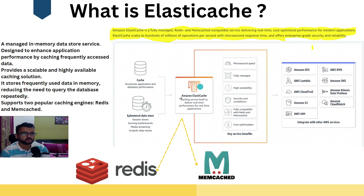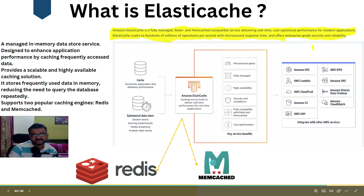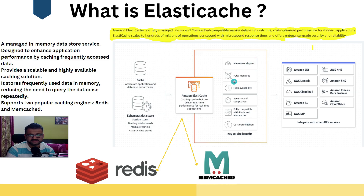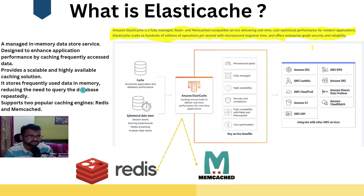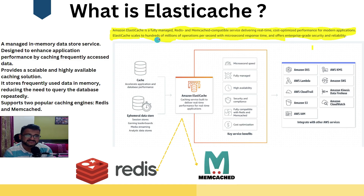ElastiCache is a wrapper on top of two different in-memory databases in the market: Redis and Memcached. Key features include microsecond speed, fully managed, high availability, security, full compatibility with Redis and Memcached, cost effectiveness, and integration with all other AWS services. AWS defines it as a fully managed Redis and Memcached compatible service delivering real-time, cost-optimized performance, scaling to hundreds of millions of operations per second with microsecond response time and enterprise-grade security.